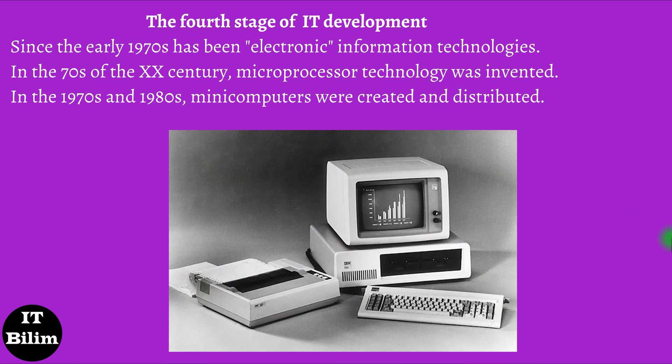The fourth stage of IT development: Since the early 1970s, electronic information technology. The tools are large computers and automated control systems, equipped with a wide range of software. In the 1970s, microprocessor technology was invented and the personal computer emerged. The advent of microprocessor technology made it possible to finally move from mechanical and electrical means of converting information to electronic ones, which led to the miniaturization of all devices. Computers, computer networks, and data transmission systems are built on microprocessors and integrated circuits. In the 1970s and 1980s, minicomputers were created and distributed, and an interactive mode of interaction between several users was implemented.